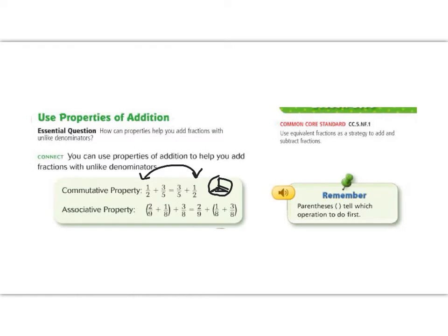The associative property is like our business associates. It's who we hang out with, and this is our grouping symbols. So you can see here, I have 2 ninths plus 1 eighth plus 3 eighths. And then on the other side of the equal sign, I have 2 ninths, 1 eighth, and 3 eighths. So they're in the same order. I didn't move them. But what I did move is my grouping symbols. They were around these two. Now they're around these two.